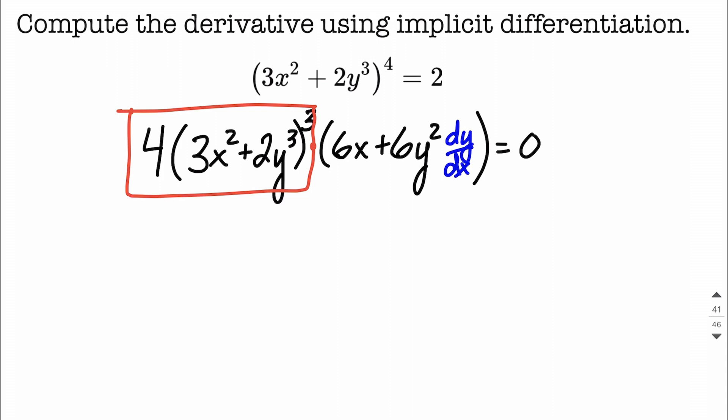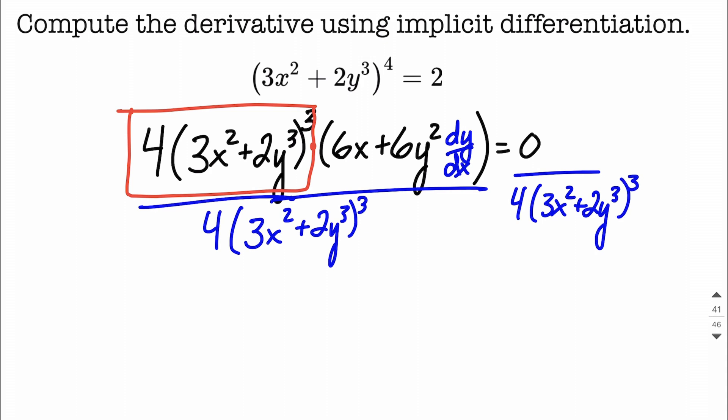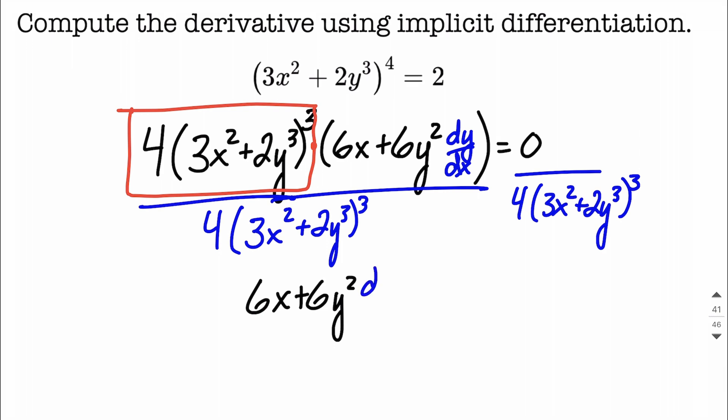So the first thing I'm going to do is try to eliminate that, move it to the other side by using a division, and really it's this entire side and this entire side, we're dividing by all of that first bit. You're going to notice on the right-hand side that when we have 0 in the numerator, 0 divided by anything is really just going to result in 0. So we really have 6x plus 6y squared with our dy dx on the left-hand side, and we have 0 on the right-hand side.